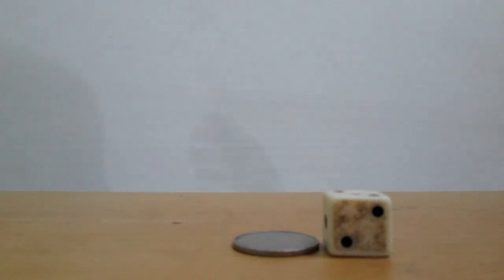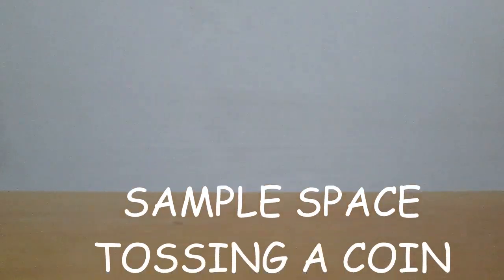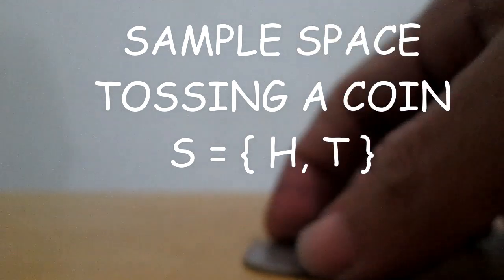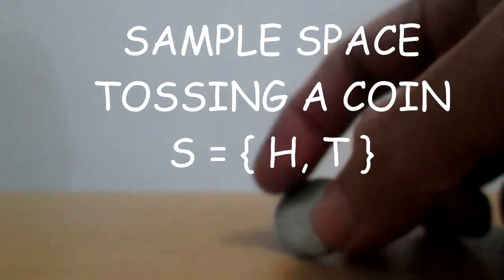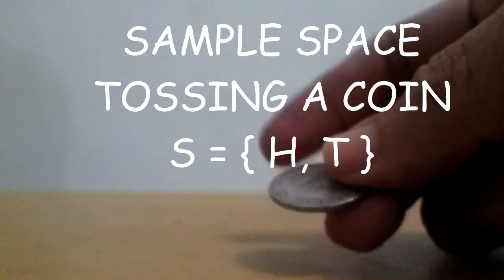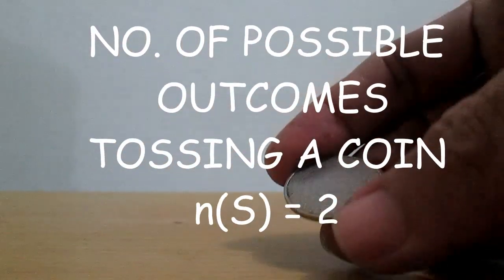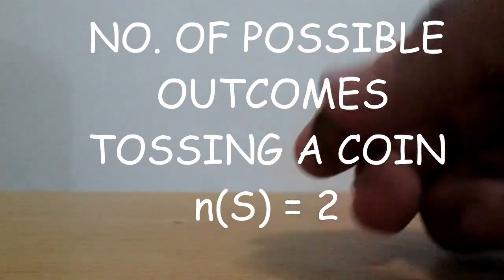Let's find the number of possible outcomes for each experiment. The sample space in tossing a coin is head and tail. The number of possible outcomes is 2.